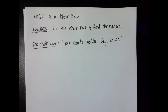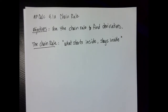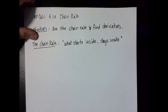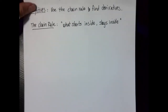Hello, math humans. We're going to do 4.1a today — we're going to be talking about the chain rule. Very famous. Our objectives are that we're going to use the chain rule to find derivatives. Some people say when you talk about the chain rule, what starts inside stays inside. So I'm going to try to show you a variety of different ways to think about the chain rule.